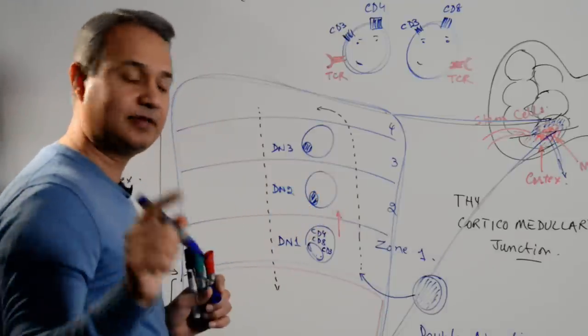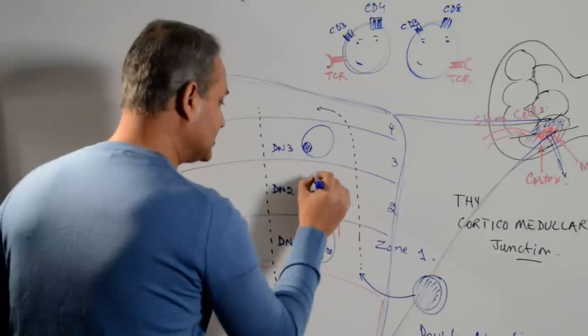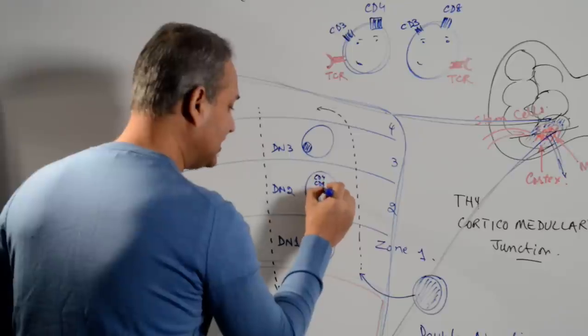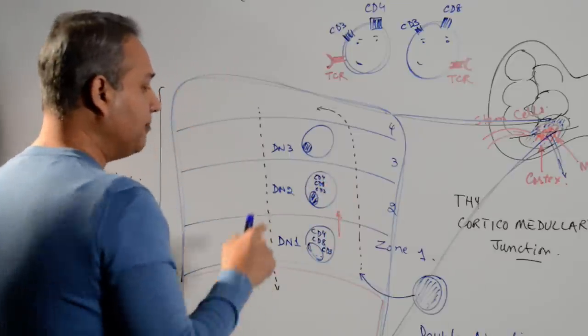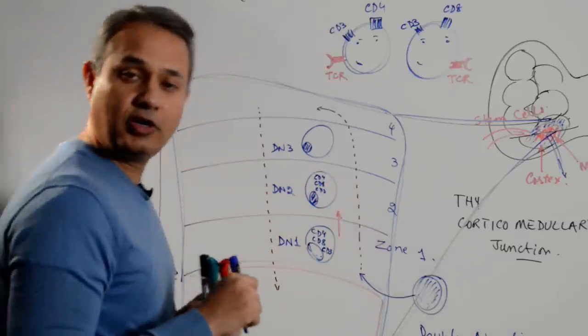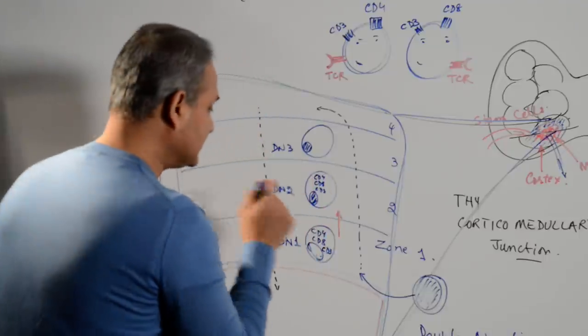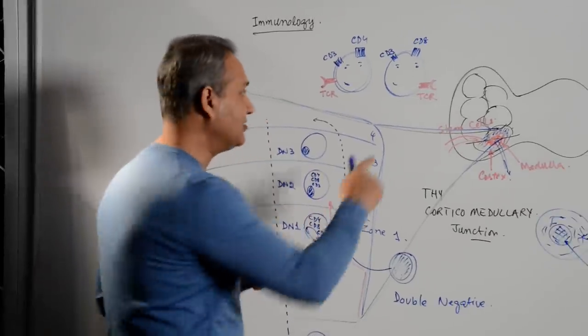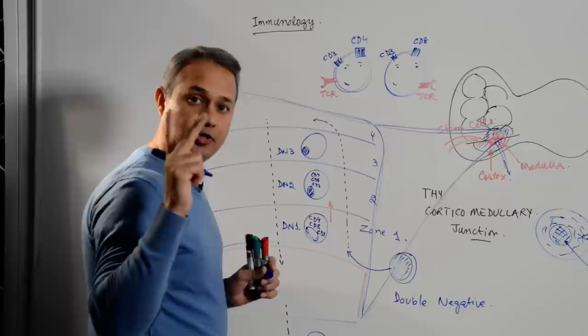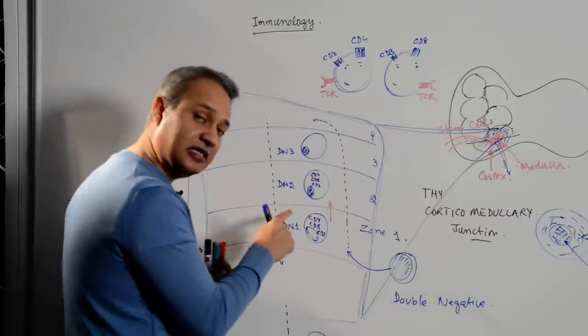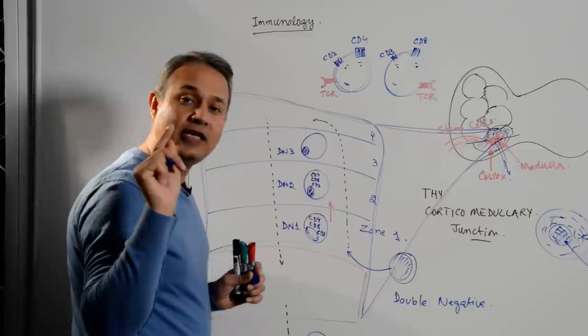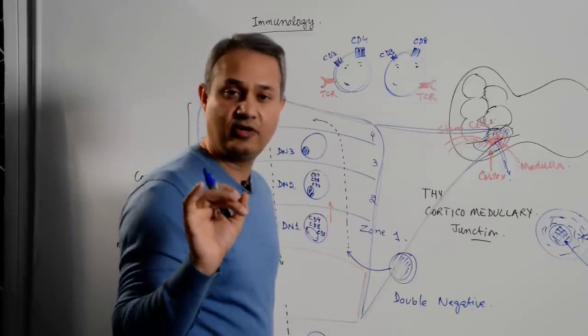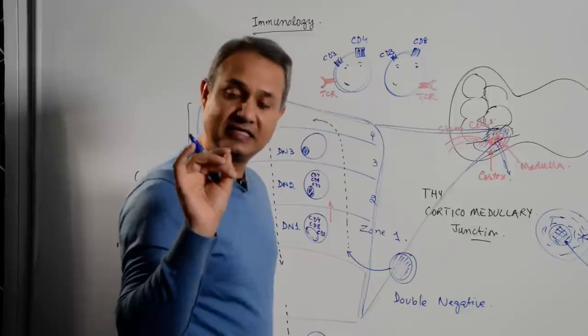Double negative two. What does that mean? It is still double negative. That is CD4 is still inside. CD8 is inside. CD3 is inside, nothing on the surface. But this cell is different from this one. Do you know how the cell is different? This cell is different because number one, it has started the process of making T cell receptors. Number two, this cell has said, I will only be a T cell and nothing else.